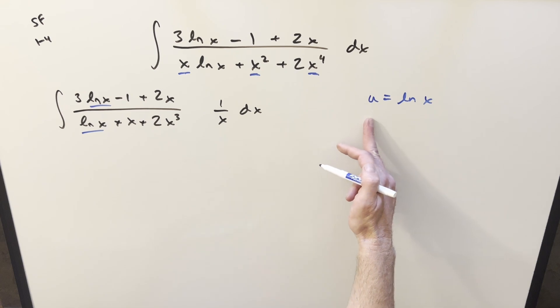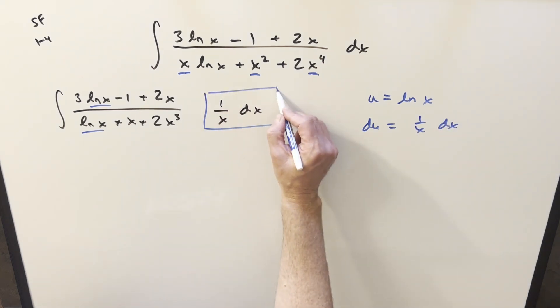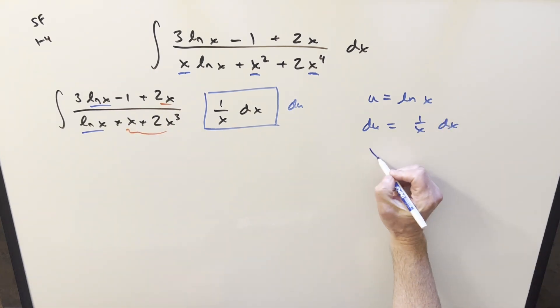So if I do my u substitution for lnx, we take a derivative, then du is just going to be 1 over x dx. So our du is right here. But notice we've got some other stuff in the expression. It's not lnx. So let's solve for x.